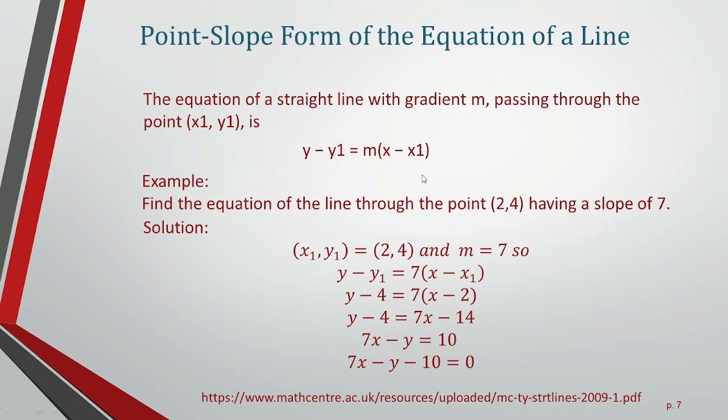The equation becomes y - 4 = 7(x - 2). By simplifying this equation, the final equation we get is 7x - y - 10 = 0.